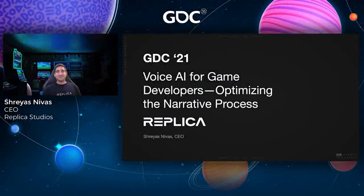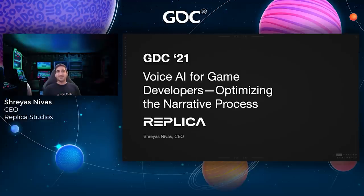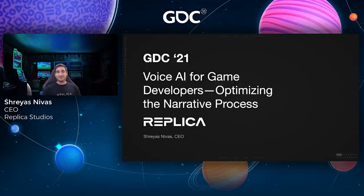Hello everyone and welcome to GDC 2021. This talk is Voice AI for Game Developers and it's all about optimizing the narrative process. My name is Shreyas, I'm co-founder and CEO at Replica Studios. For those of you who haven't heard about Replica yet, we're an AI company. We make AI voices for games and movies. I'm really excited to be here today and tell you about this new technology that can massively complement all of the wonderful work you guys are doing.